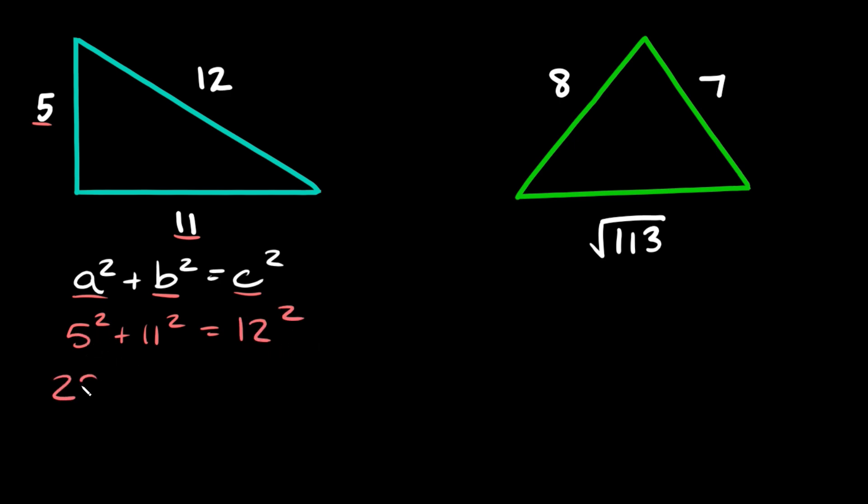5² is 25. 11² is 121 and 12² is 144. Now 25 + 121, that's equal to 146. So here we get 146 = 144.